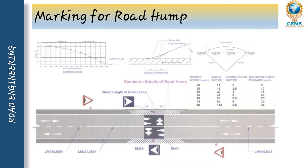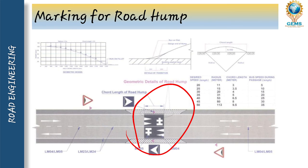Next is marking for road humps. As you can see, the marking of the road hump is placed with chord length and geometric details. The desired speeds range from 20 to 50 km/h, with corresponding radii in meters of 11, 15, 20, 31, 53, 80, and chord lengths of 3, 3, 3, 3.5, 4, 4.5, 5. The bus passing speed ranges from 5 to 35 km/h accordingly. The road hump marking is placed based on these parameters.